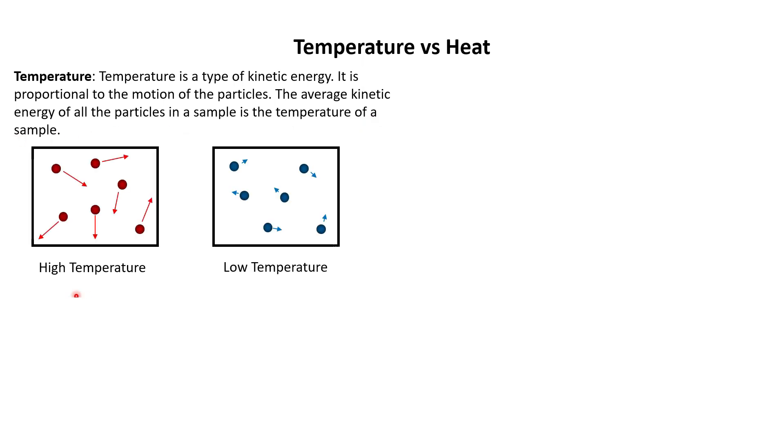So let's compare a sample with a high temperature to a sample with a low temperature. In the high temperature sample, the particles are moving and they are moving quite fast. In the low temperature sample, the particles are still in motion, but they are not moving as fast. So we have high velocity particles in our high temperature sample and low velocity particles in our low temperature sample.